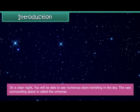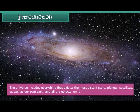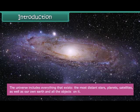On a clear night, you will be able to see numerous stars twinkling in the sky. The vast surrounding space is called the Universe. The Universe includes everything that exists. The most distant stars, planets, satellites, as well as our own Earth and all the objects on it.